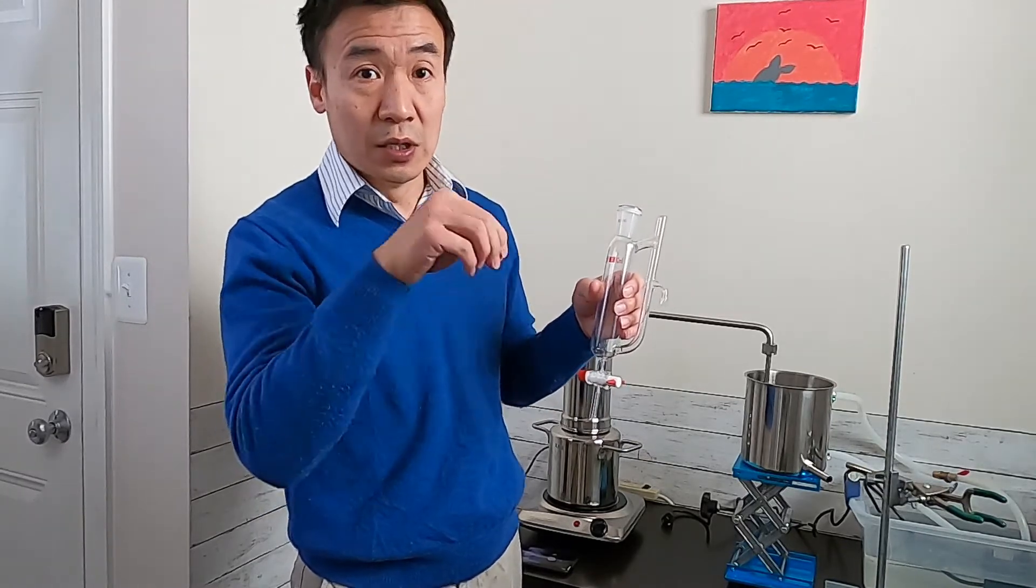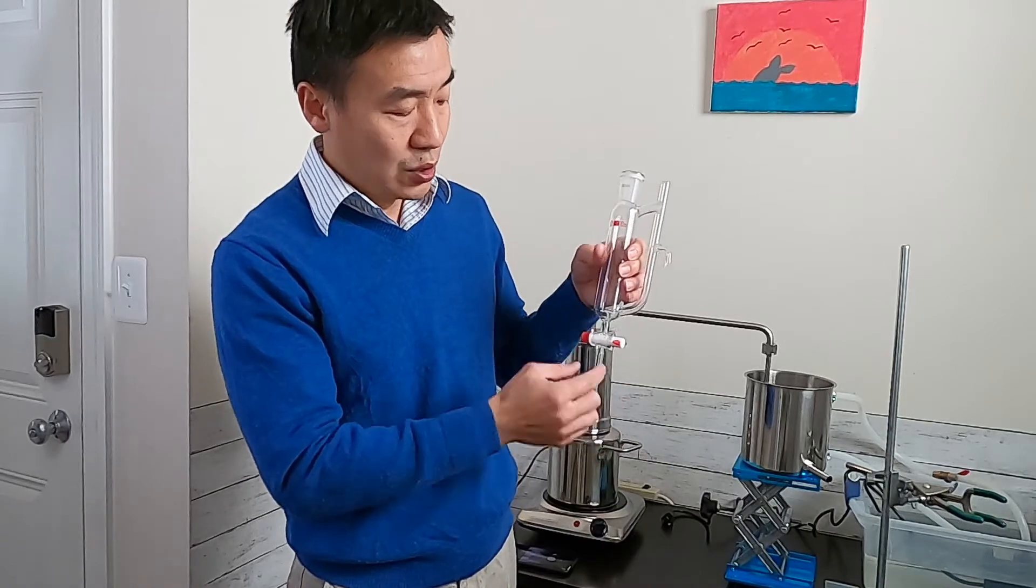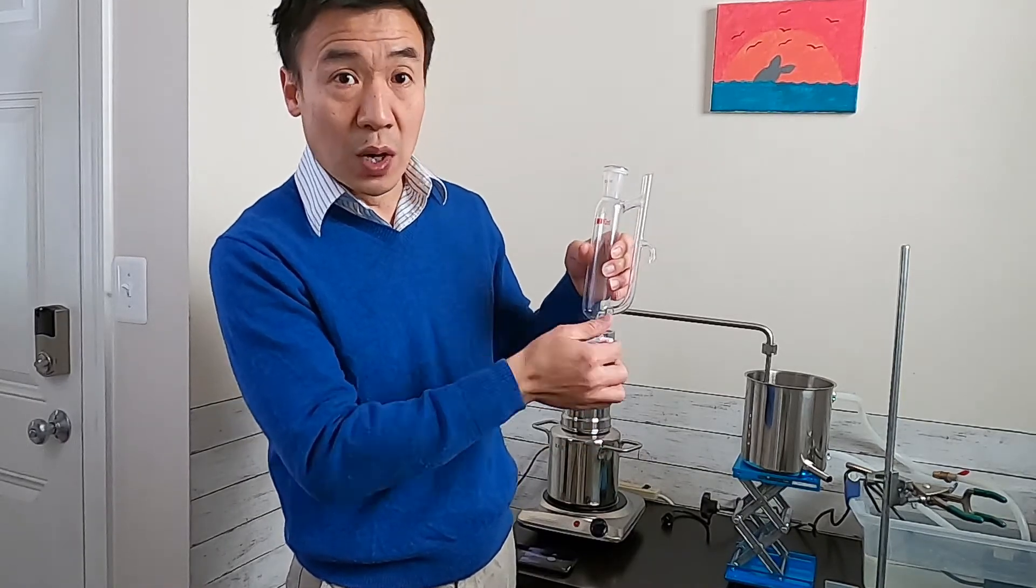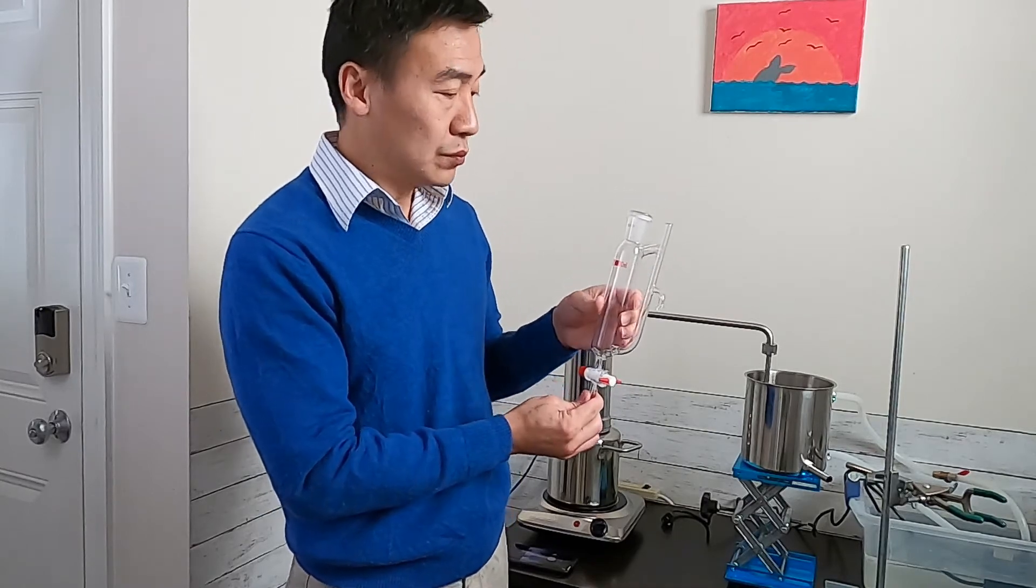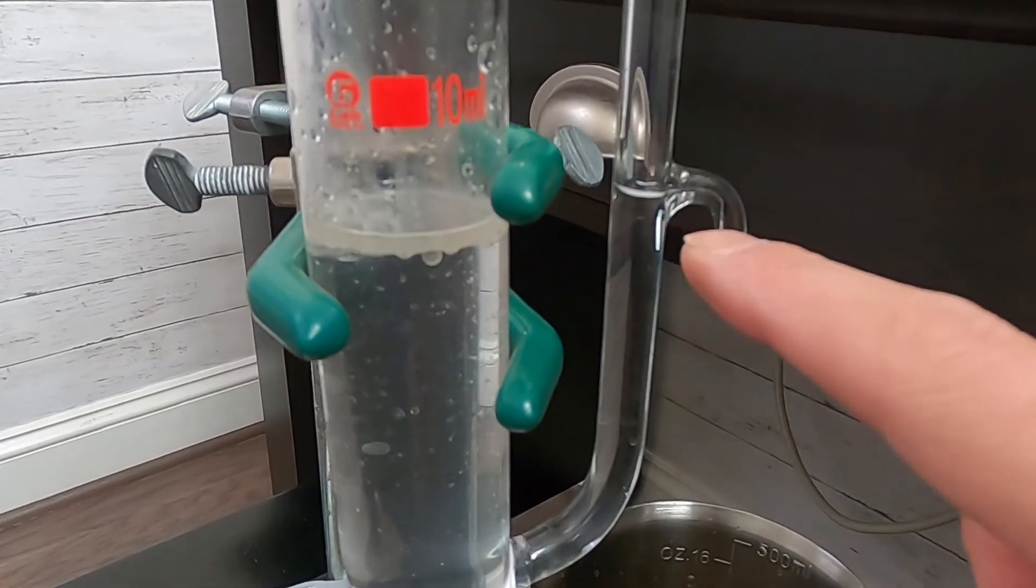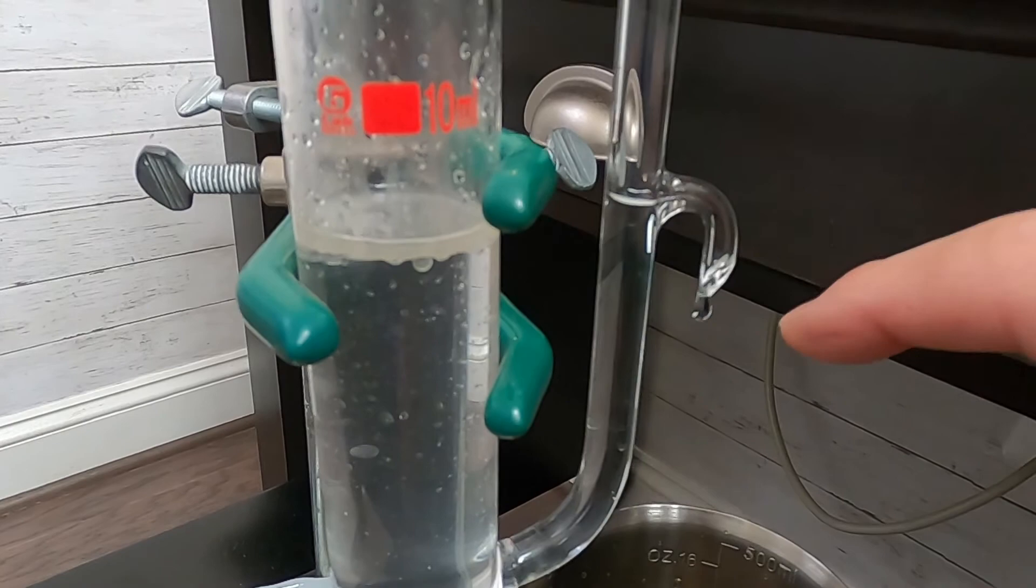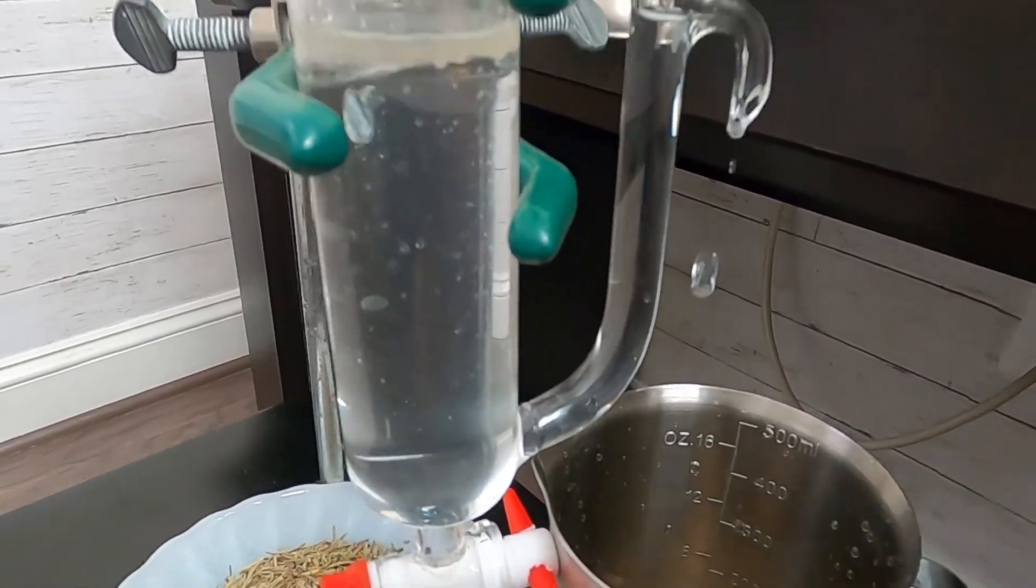You don't need a dropper to collect; you just separate when you're discharging the distillate. Because the level already reached here, the hydrosol goes into the cup.